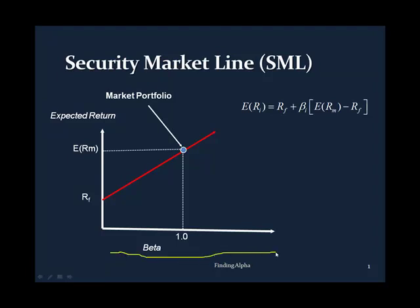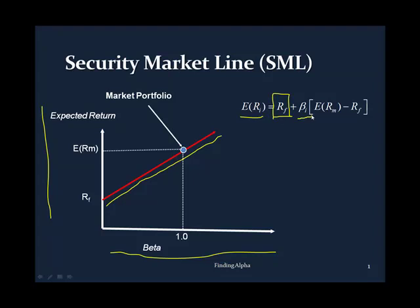If you measure risk in standard asset pricing theory on the horizontal axis and return on the vertical axis, you should get a linear positive relationship — that's what any risk model says. Expected return is going to be equal to some constant, some zero-beta risk-free asset return, plus a risk loading beta, multiplied by the price of that risk loading, which in the CAPM is simply the equity premium. It should go up linearly in risk if you measure risk correctly.